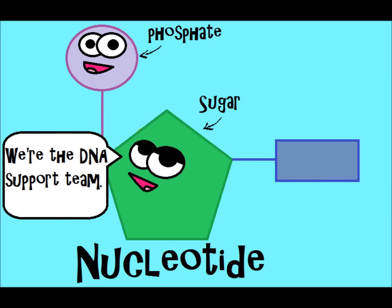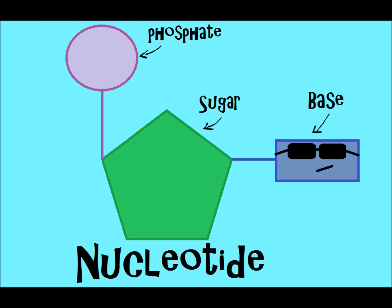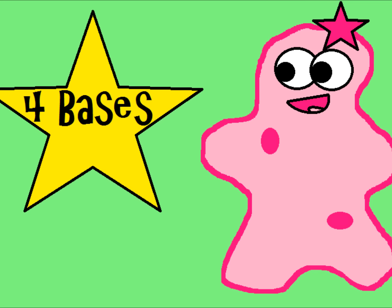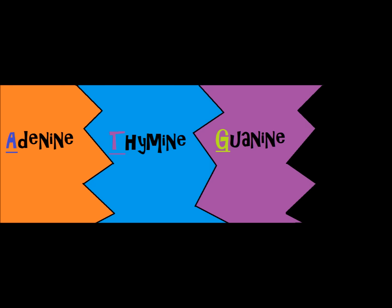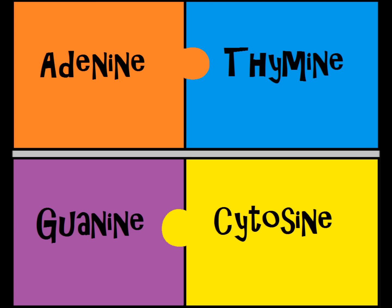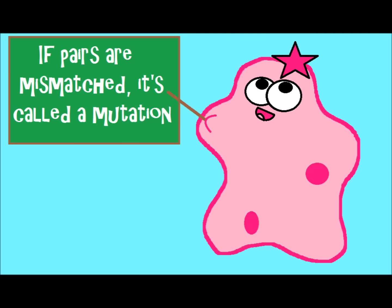The most important part of the nucleotide is the base, because the bases actually code for traits. There are four bases in DNA, usually referred to by their initials: A, T, G, and C — adenine, thymine, guanine, and cytosine. These bases pair in a specific pattern. If they get mismatched, that's what we call a mutation, which we'll get to a little bit later. A little saying can help you remember which base pairs with which.